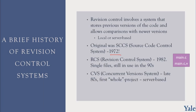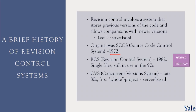CVS, Concurrent Version System, came out in the late 80s, and this was the first whole-project system. It was server-based, and this is where large multi-programmer software systems based in different locations started using it — that was the beginning of that process.